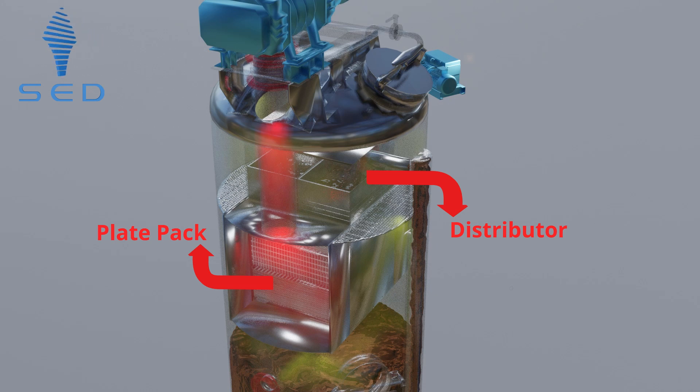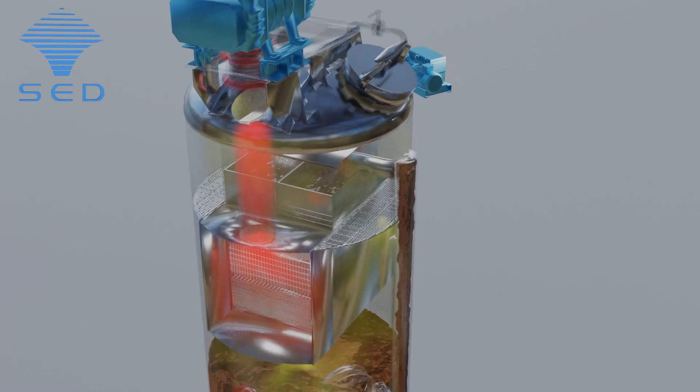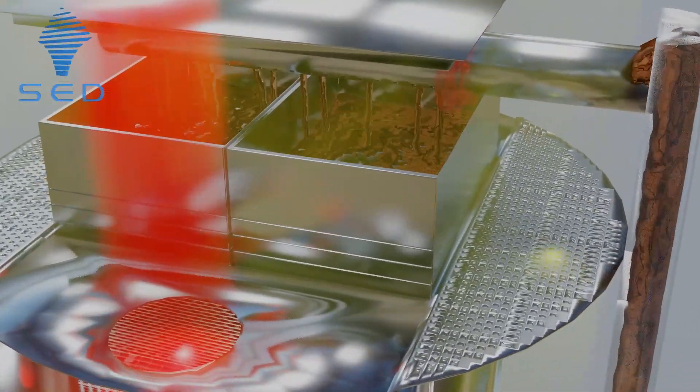After maintaining a certain level of hot feed in the distribution assembly, the feed is sprayed on top of the plate packs arranged one above the other where heat transfer takes place between the feed and the compressed vapors.